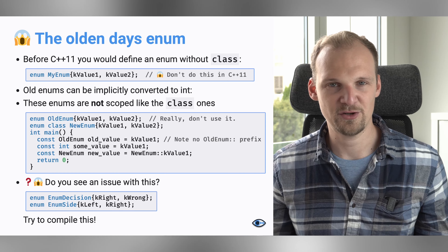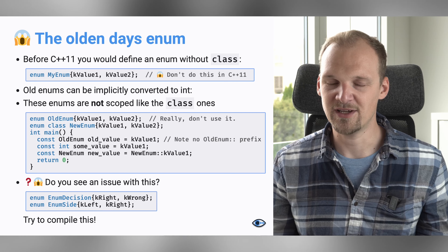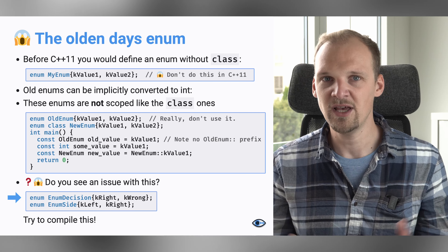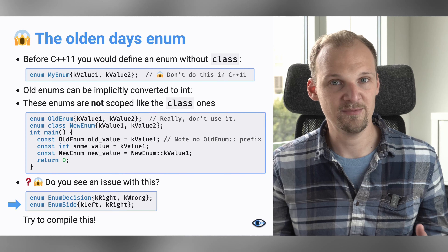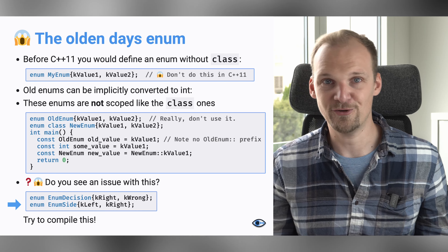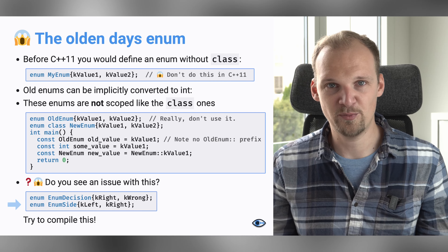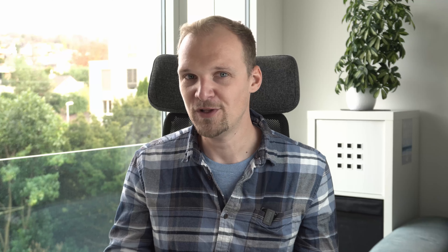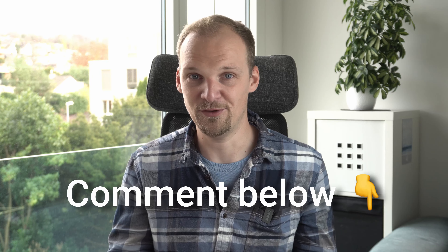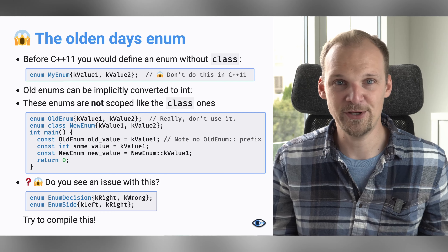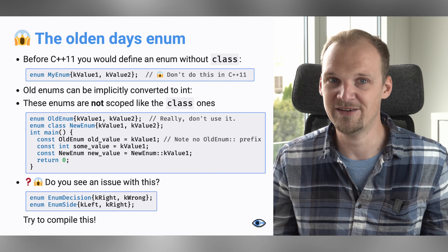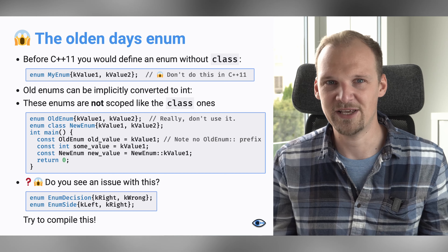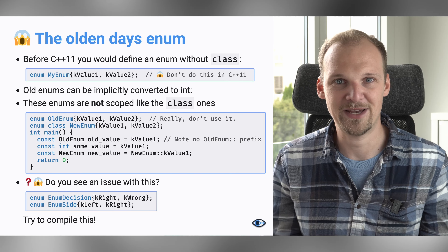Just to outline this issue better: let's say we have two enums — enum Decision, which is either right or wrong, and enum Side, which is either right or left. If we want to define both of them within one CPP file, what will happen? Feel free to comment below what you think will happen and why. Also, just copy it over to a small CPP file and give it a try. At this point you know how to compile your files, so that should take you maybe two minutes max.